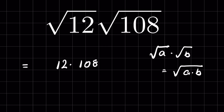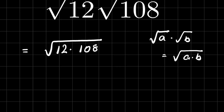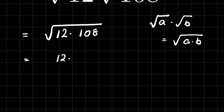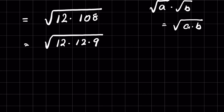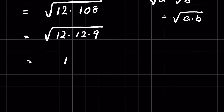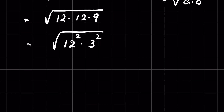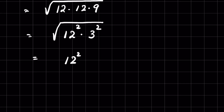Now 12 times 108 we can write as square root of 12 times 9 times 12. That gives us 12 squared, and 9 we can write as 3 squared, all under the square root.